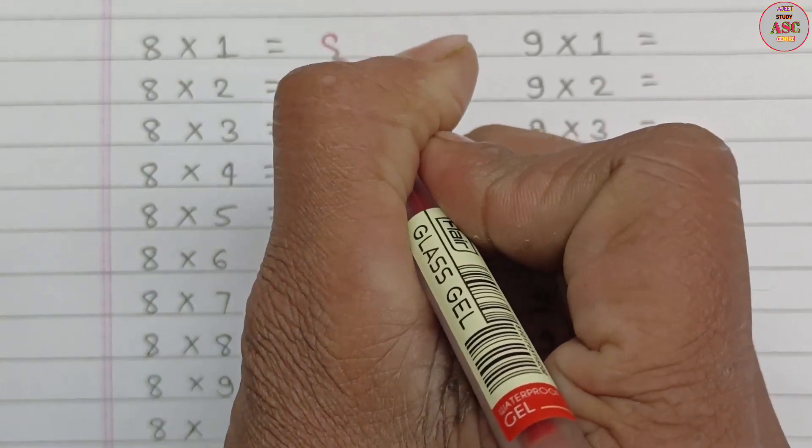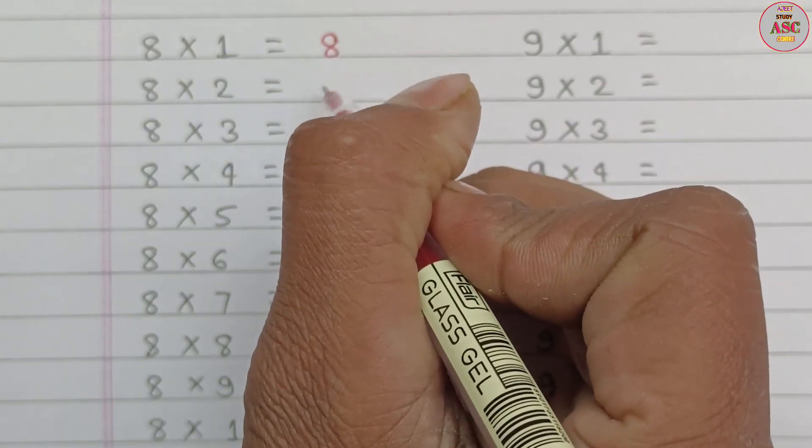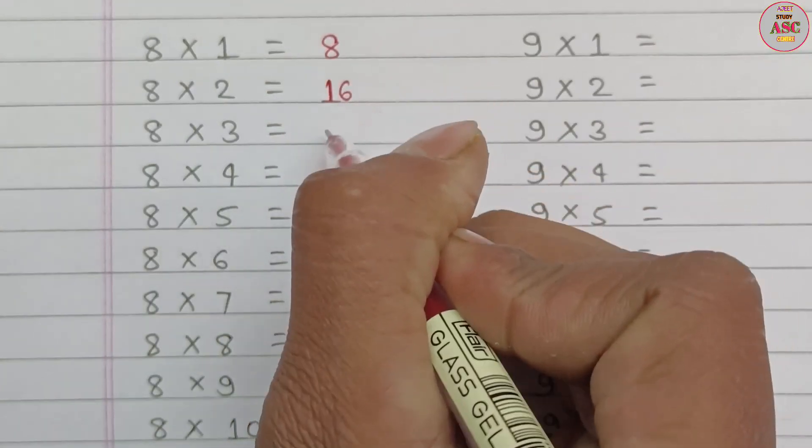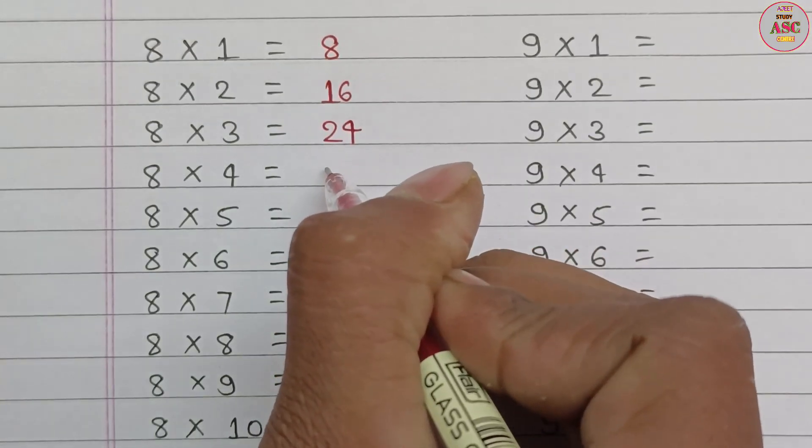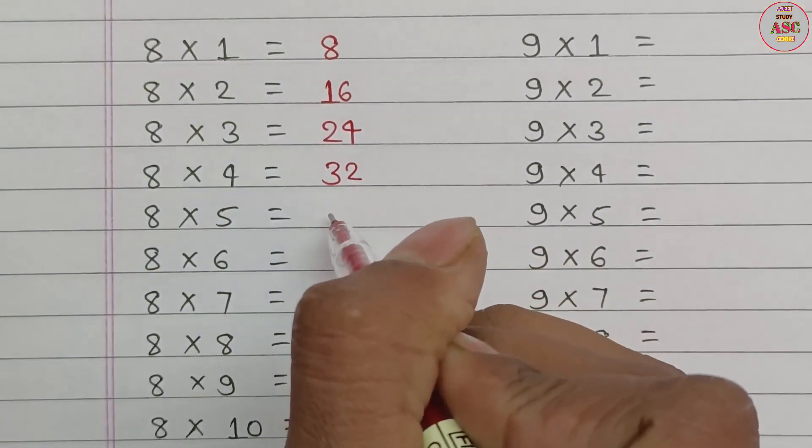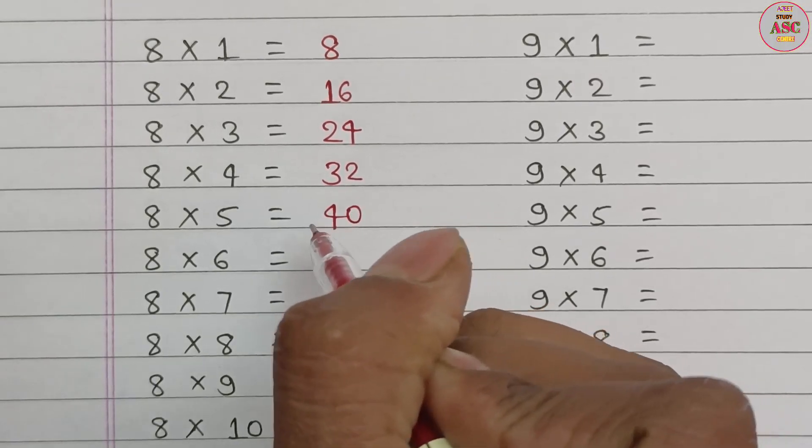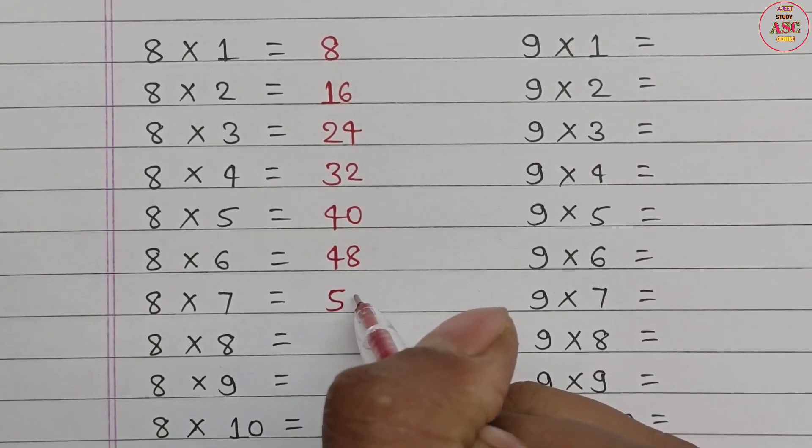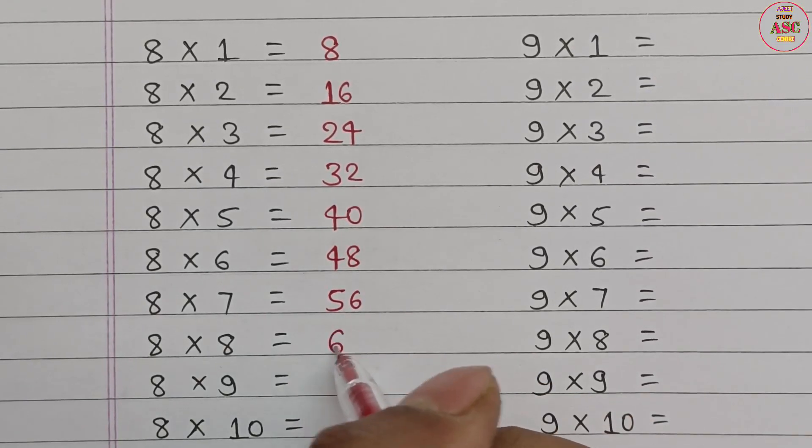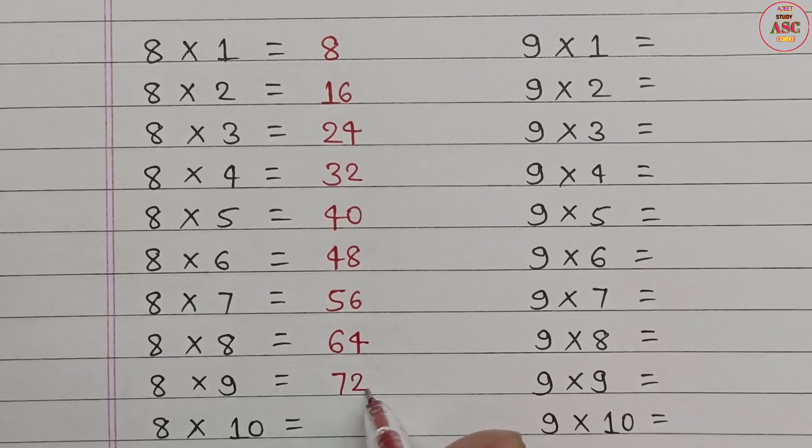8 times 1 equals 8. 8 times 2 equals 16. 8 times 3 equals 24. 8 times 4 equals 32. 8 times 5 equals 40. 8 times 6 equals 48. 8 times 7 equals 56. 8 times 8 equals 64. 8 times 9 equals 72. 8 times 10 equals 80.